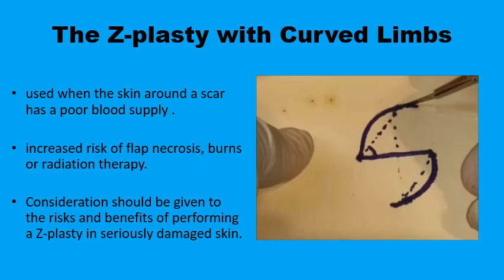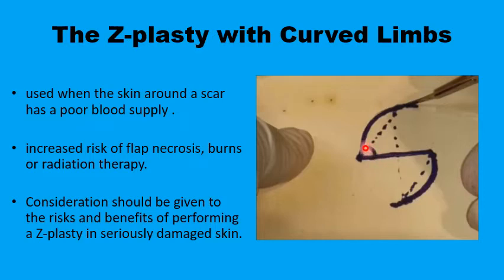There may also be concerns about the viability of the Z-plasty skin flaps — particularly the flap tips — in situations where skin has been previously irradiated or has burn scarring, where significant reduction in blood supply is expected. You may increase perfusion to the flap tips by increasing the angle or using curvilinear rather than straight lines in the flap design. However, in situations with compromised blood supply, it is important to carefully weigh the pros and cons of performing Z-plasty in the first instance.